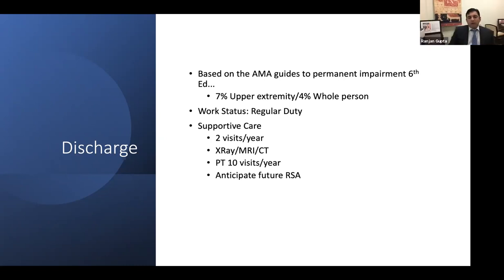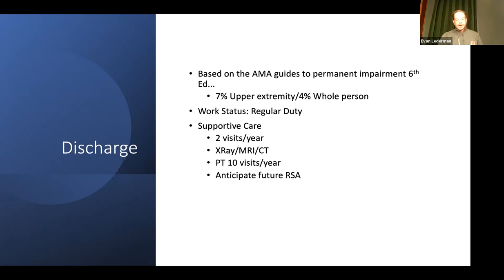The next question: what is the role of the functional capacity evaluation, when do you use them, and do you ever ask for them? In the difficult case, when there is a disconnect between what you feel the patient can do and what they feel they can do, an FCE gives you objective measurements. It's also useful when there's a conflict with an IME physician, or in cases with serious injuries like multiple fractures where you don't know what they can and can't do for a specific position. An FCE can also pull out malingerers — they have a variety of ways to test for malingering and poor effort during the test. You can let the system work to adjudicate things properly.